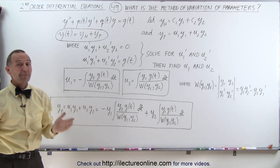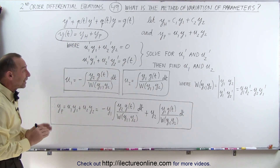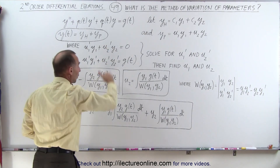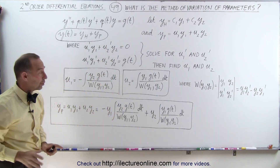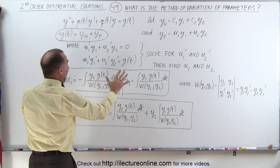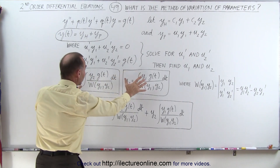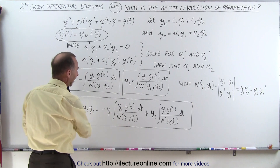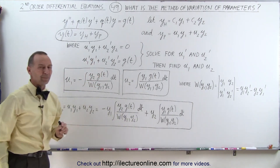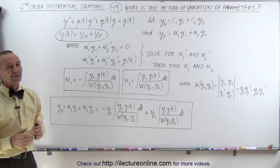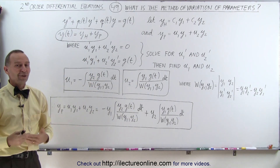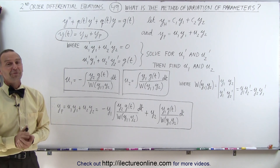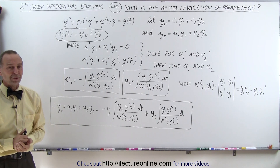That's what we mean by the method of variation of parameters. Even if you don't know how to derive these equations — though we'll show you in the next several videos — you can simply take these formulas, plug in the proper functions, and find the particular solution. We'll show examples of how to do that on real problems later.